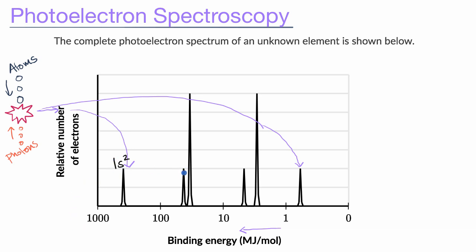Then this next spike is going to be the 2s electrons, and since we have more electrons than that, we must have filled up the 2s subshell. And then this next spike — this looks like 2p. Notice the detector is detecting more electrons there. We also have more electrons, so that subshell must have been filled. You have roughly three times as many 2p electrons as 2s electrons, which makes sense — the 2p subshell can fit six electrons, while the 2s fits two. So this next spike is going to be the next highest energy shell, which has a lower binding energy.